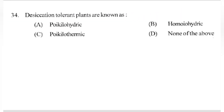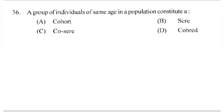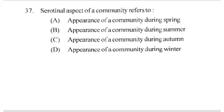Desiccation tolerant plants are known as homoiohydric plants. Which of the following letter combinations would be used to designate a transition horizon having distinct parts with properties of E horizon and other parts having properties of B horizon? The answer is C part: E/B horizon. A group of individuals of the same age in a population constitutes a — answer A part: cohort. The seasonal aspect of a community refers to — answer B part: appearance of a community during summer.